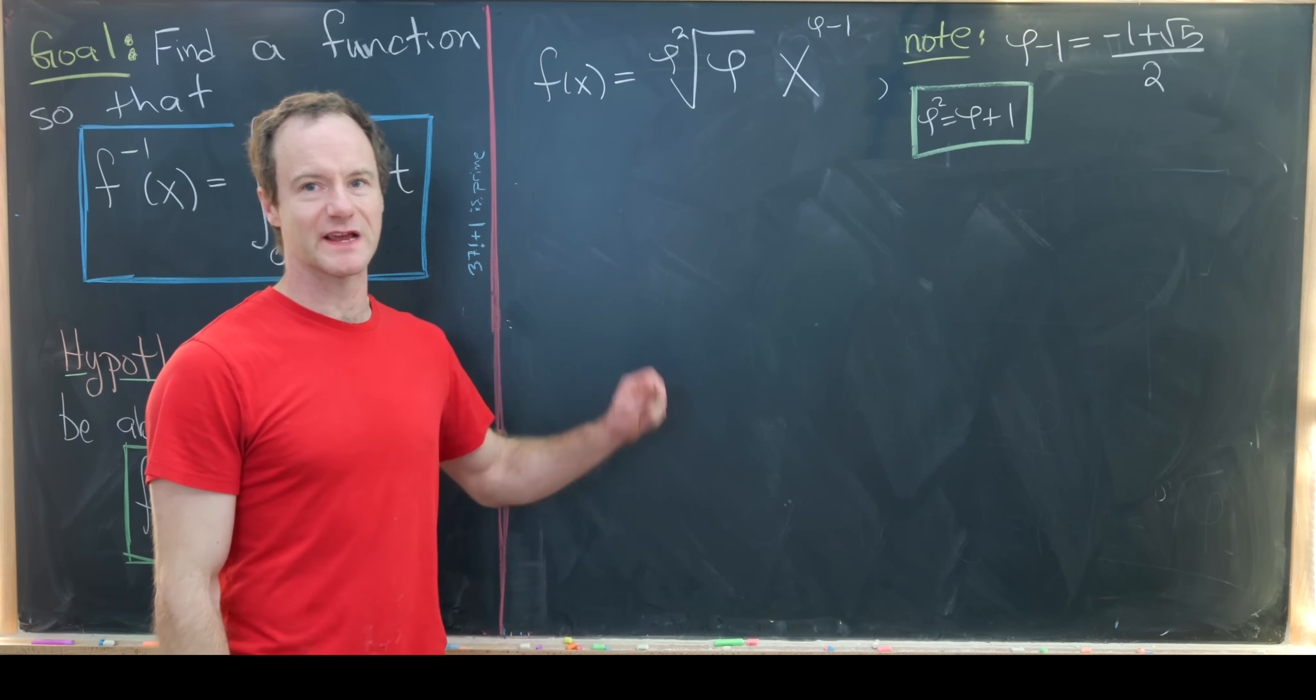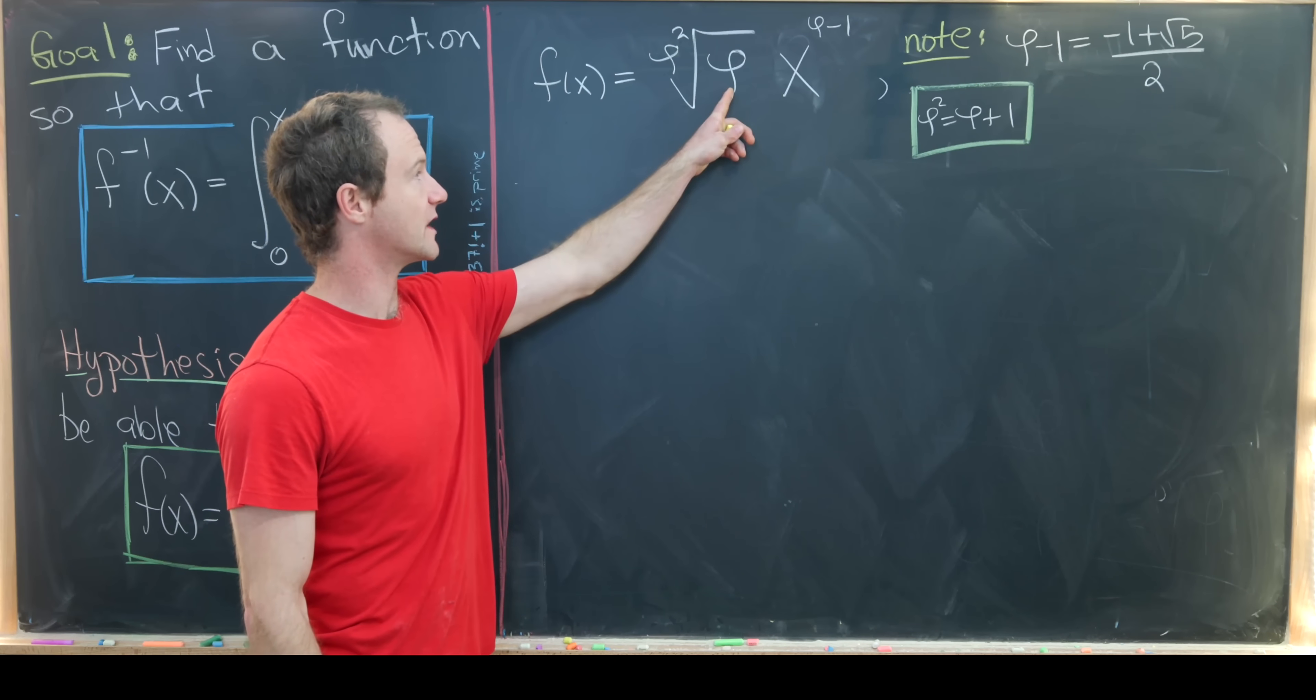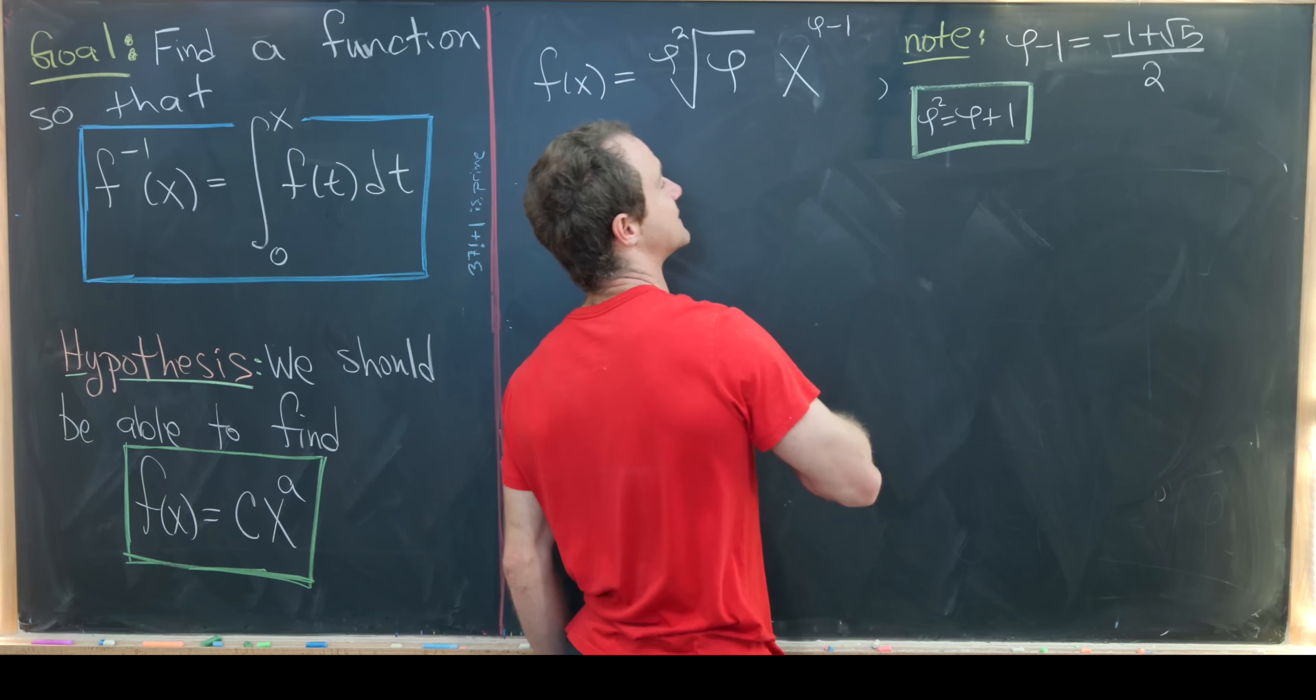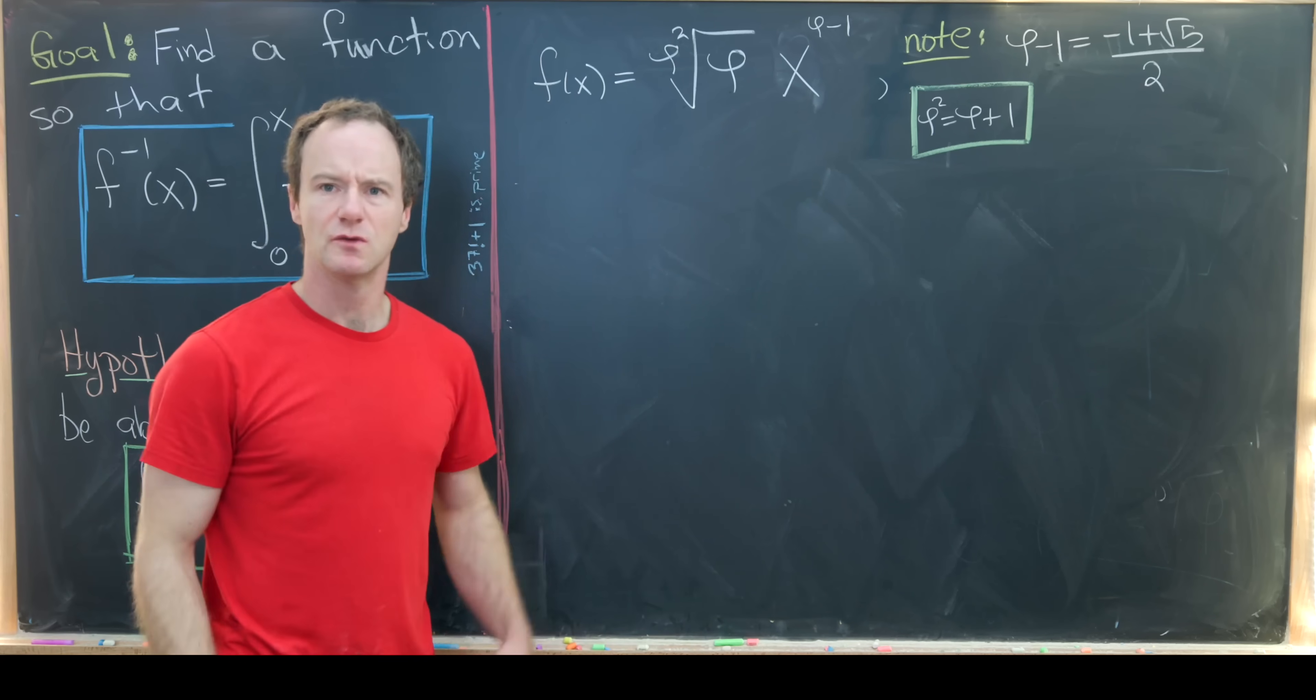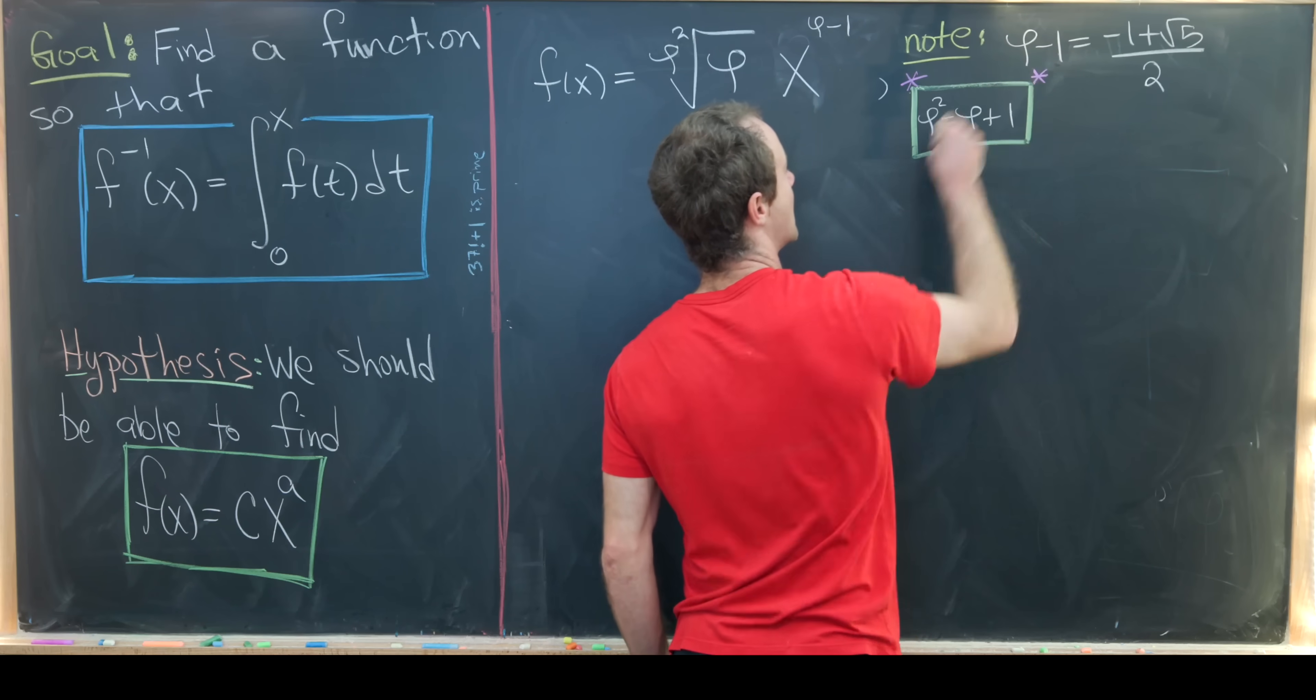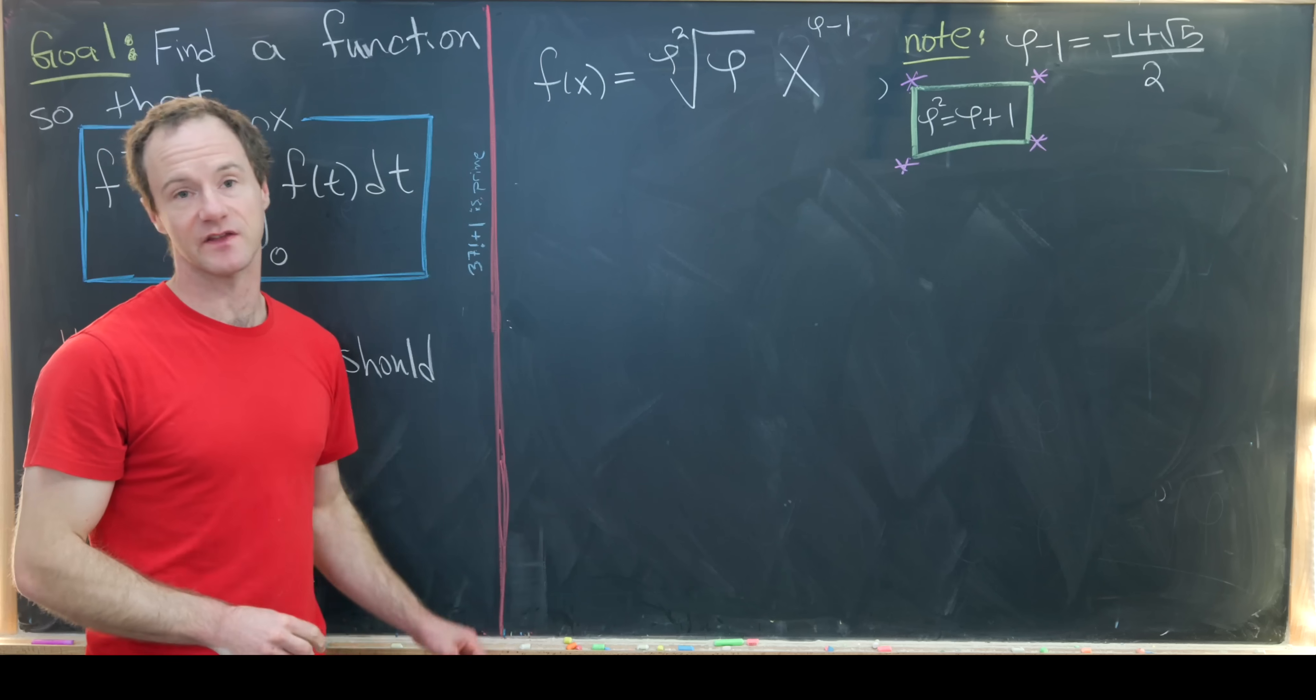Via calculations on the last board, it seemed like the following function will satisfy this blue boxed equation: f(x) is the phi squared root of phi times x to the (phi - 1). I've changed this exponent to be in terms of phi using the fact that phi minus 1 is minus 1 plus root 5 over 2, which is an easy calculation. Let's also recall that a defining characteristic of the golden ratio is that phi squared equals phi plus 1.